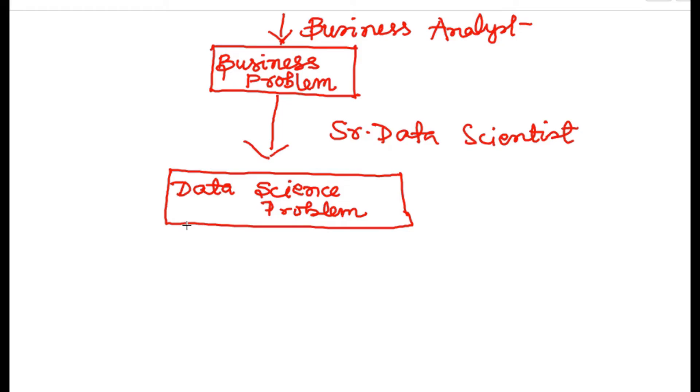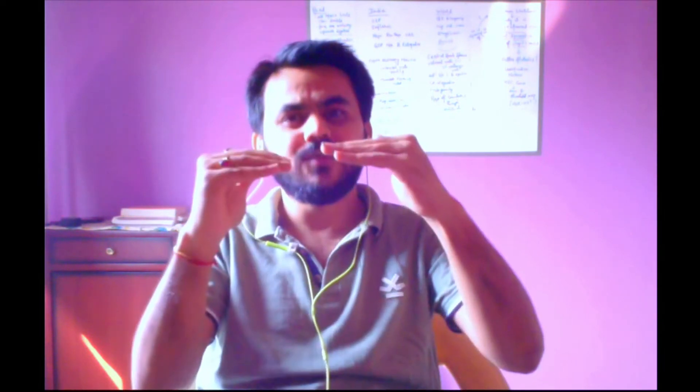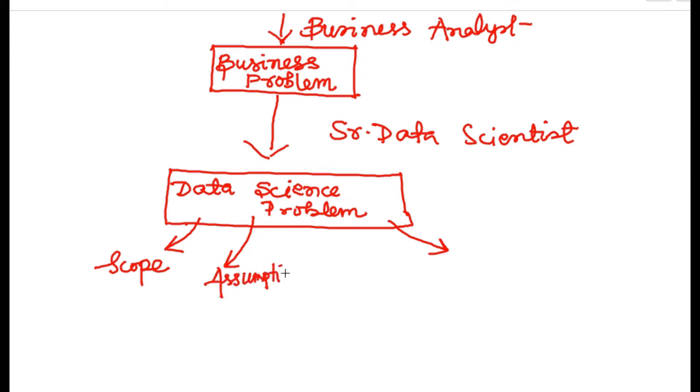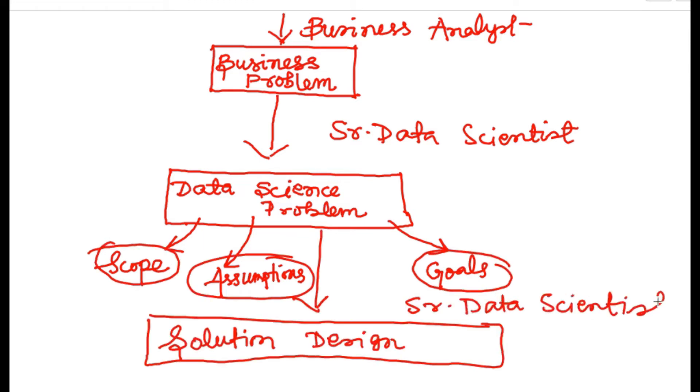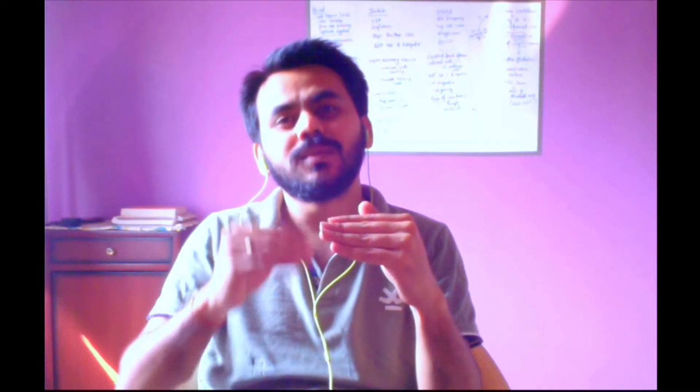Not all business problems can or should be solved using the data science approach — there could be other approaches as well. Once you transfer the business problem to a data science problem, you need a solution design. This involves laying down the scope of the problem, the assumptions, and the desired goals or outcomes.